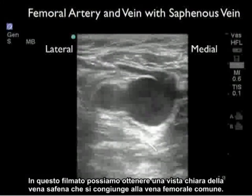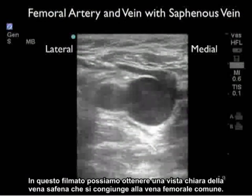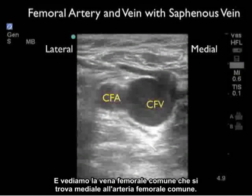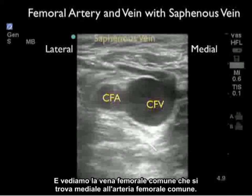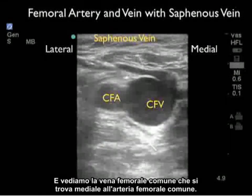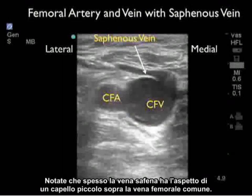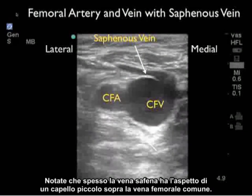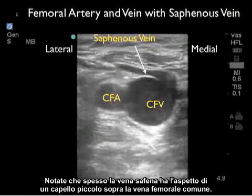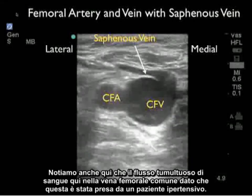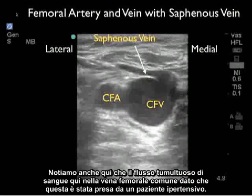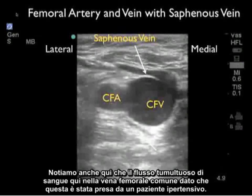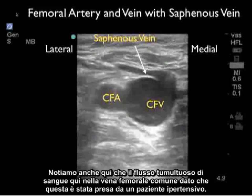In this video clip we get a good look at the saphenous vein joining into the common femoral vein, with the common femoral vein located medial to the common femoral artery. Note that the saphenous vein has the look often of a little hat on top of the common femoral vein, and we note here the turbulent flow of blood within the common femoral vein, as this was taken in a hypotensive patient.